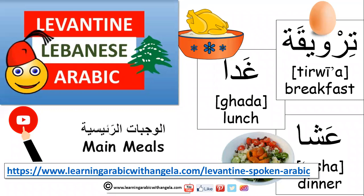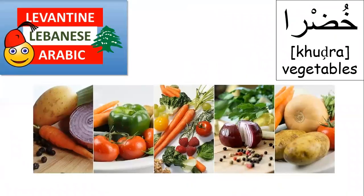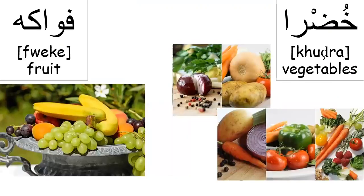Hello and welcome to this video about the main meals in Lebanese. First of all, khudra means vegetables. Fouaki is fruit.